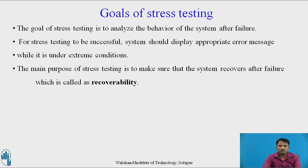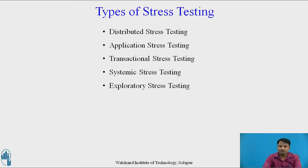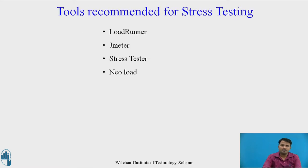The goal of stress testing is to analyze the behavior of the system after failure. For stress testing to be successful, the system should display an appropriate error message while it is under extreme conditions. The main purpose of stress testing is to make sure that the system recovers after failure, which is called recoverability. Types of stress testing are distributed stress testing, application stress testing, transactional stress testing, systematic stress testing, and exploratory stress testing. Tools recommended for stress testing are LoadRunner, JMeter, Stress Tester, and NeoLoad.